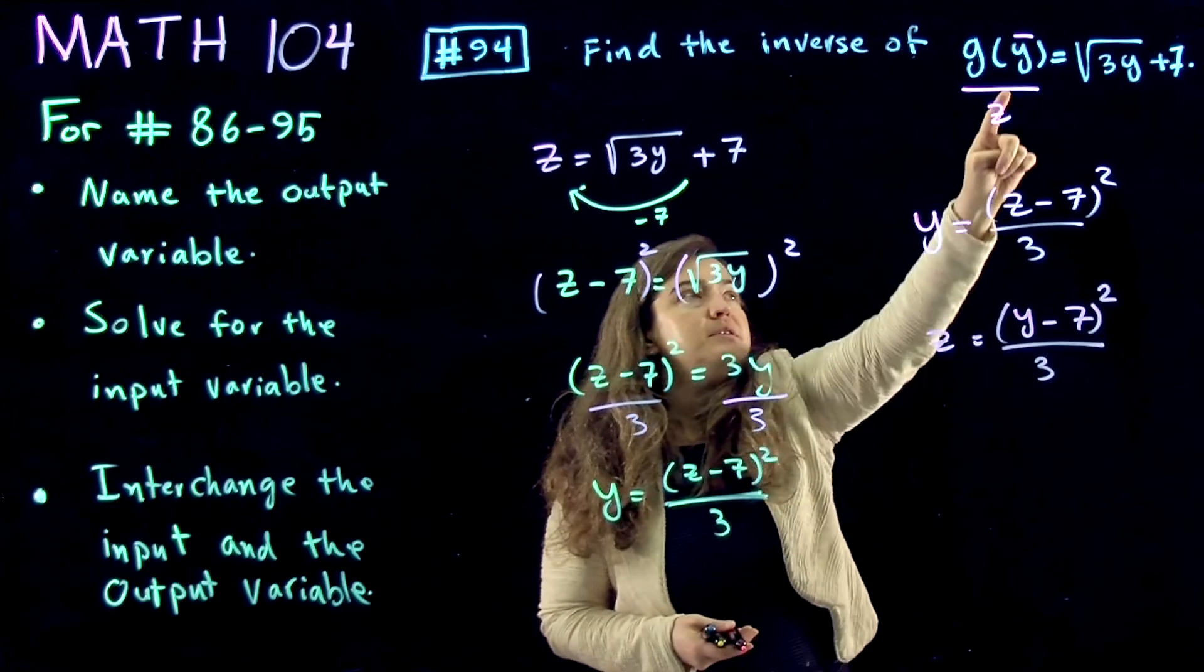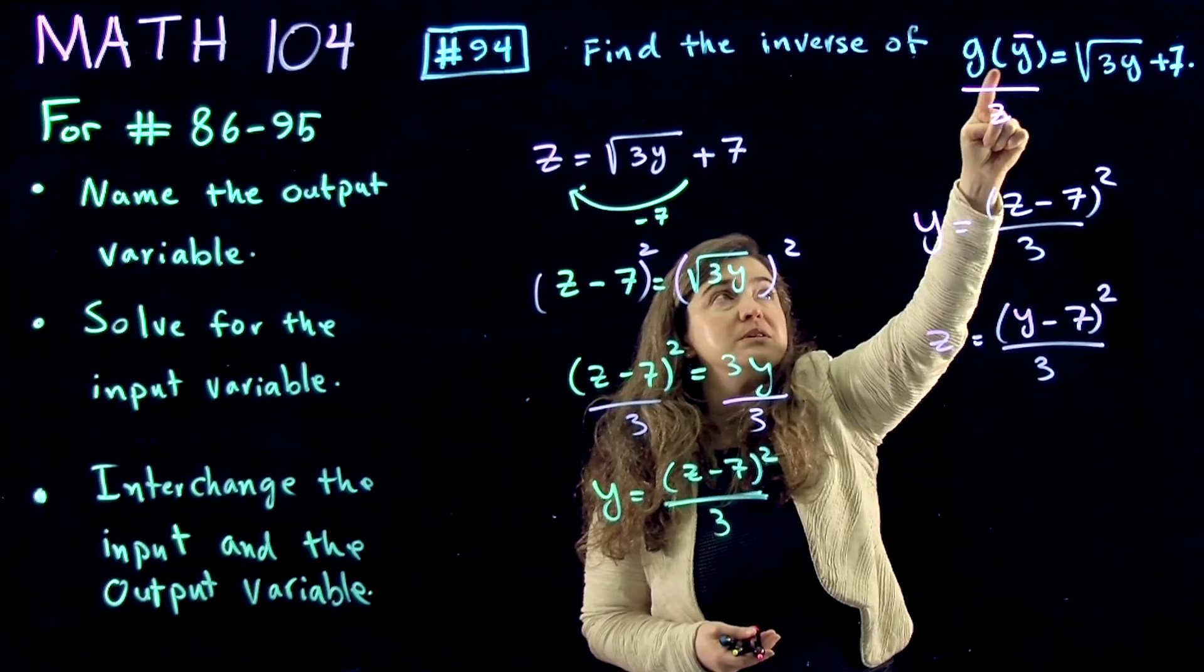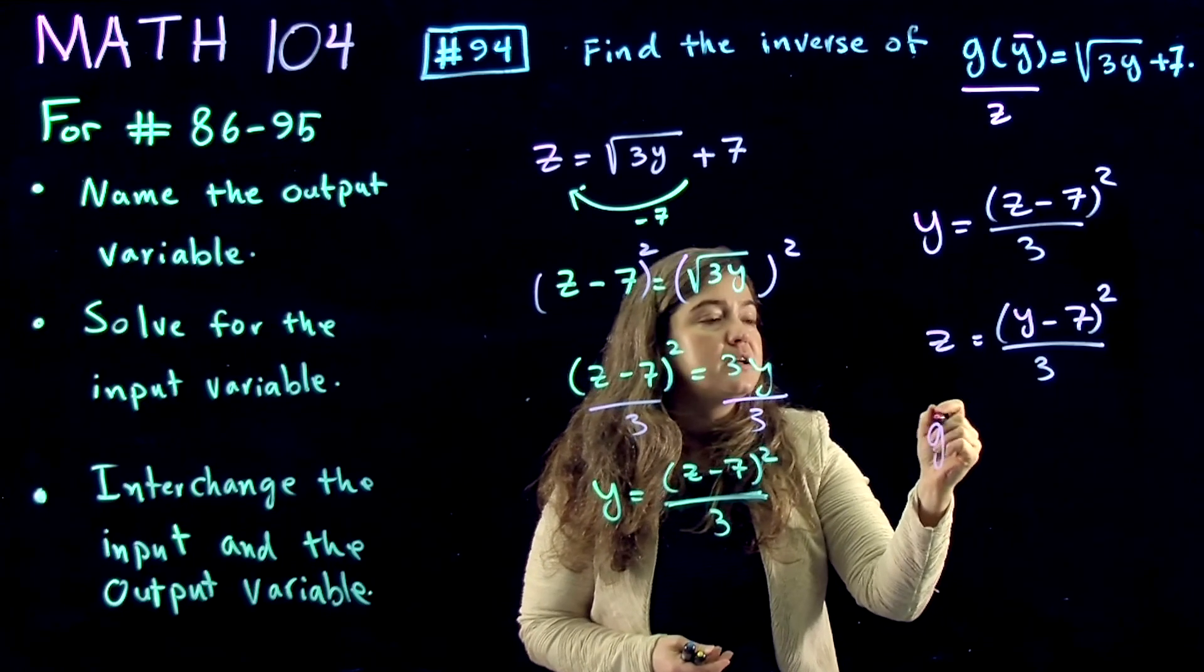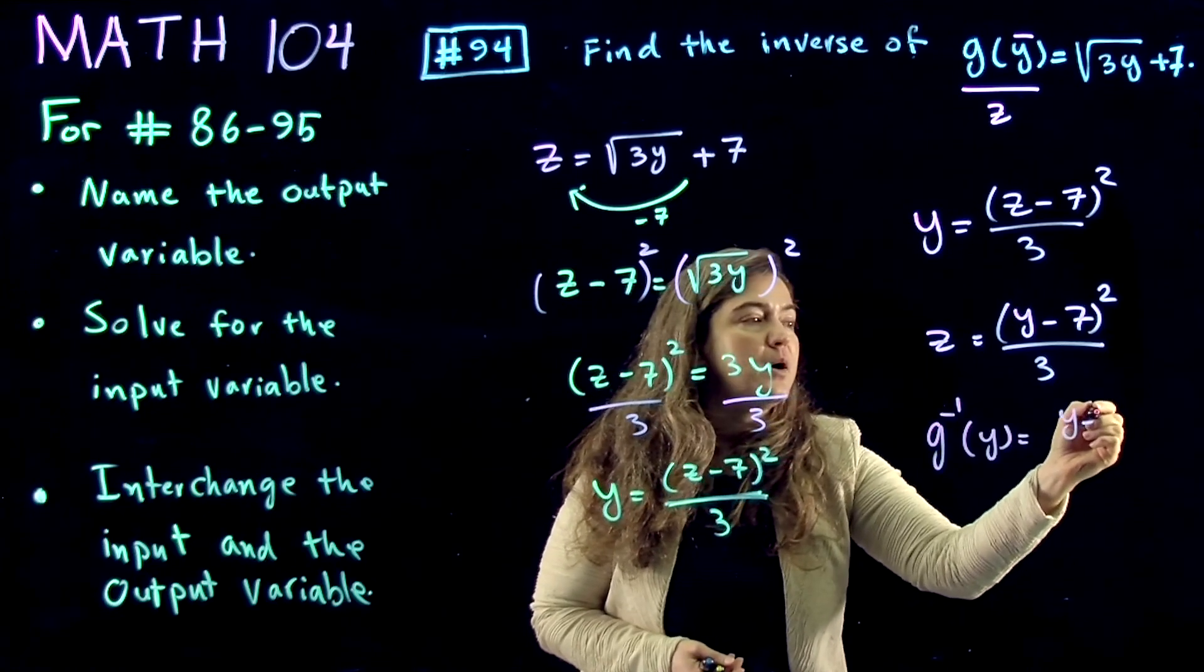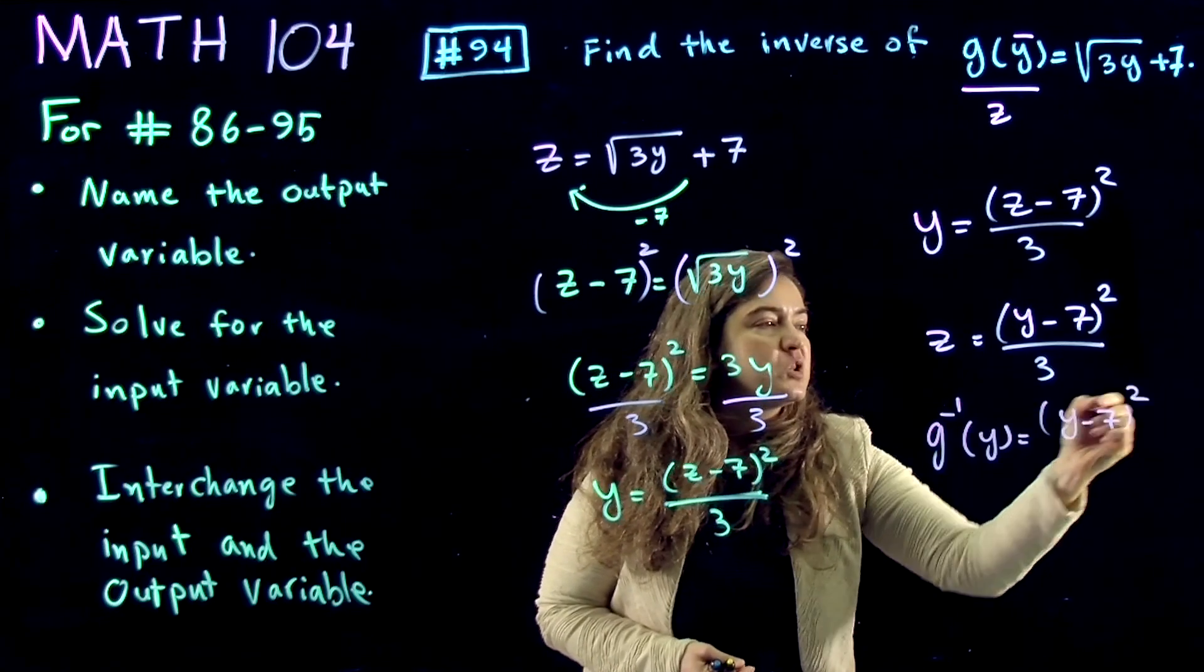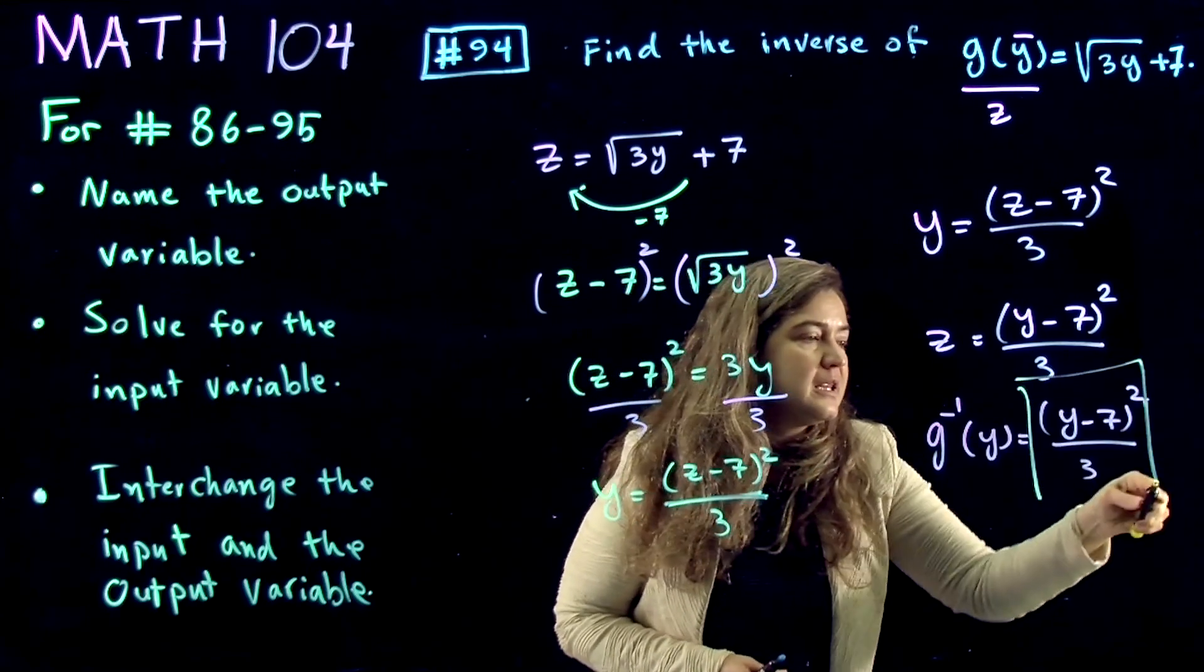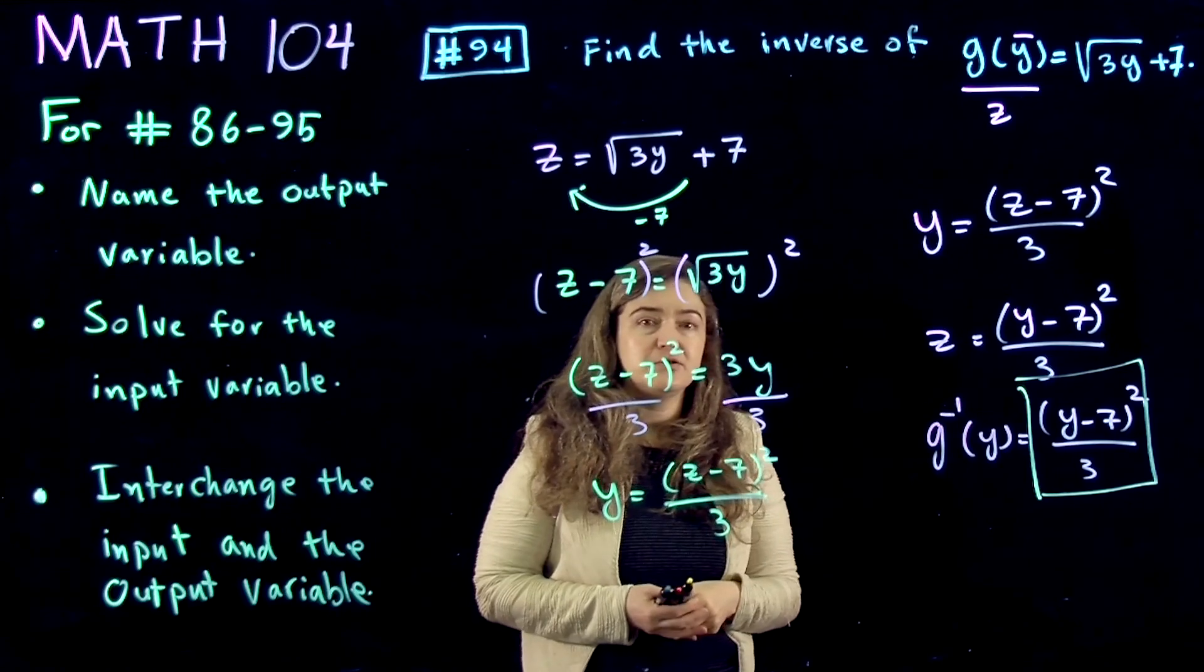Now the output function was g of y and we figured out the inverse of that, so it's g inverse of y is equal to y minus 7 to power 2 divided by 3. This is the answer and that's how you enter it in your gateway exam.